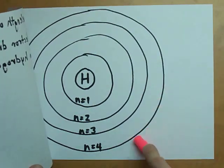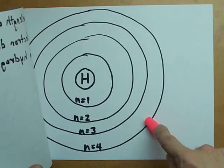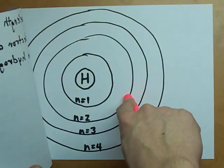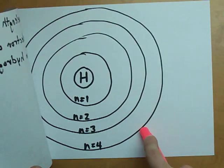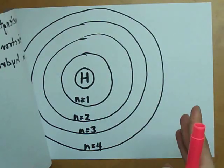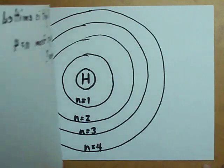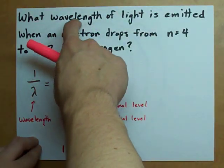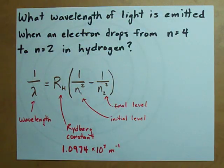But it's in the fourth energy level chilling, having a good time, and then drops down to the second energy level. It has to give off energy to do that. It does so in the form of light. And I want to know what color or how energetic or what the wavelength of that light is.